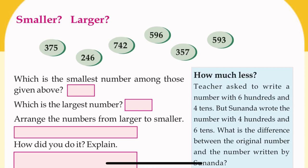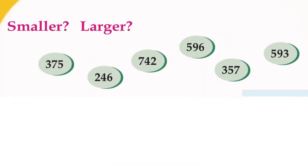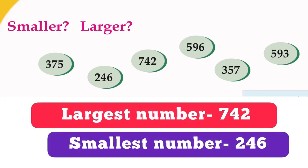357, and 593. Which is the largest number here? Yes, 742. And which is the smallest number? 246. Look at the place value of each number, then we can easily find out which is the largest number and which is the smallest number.